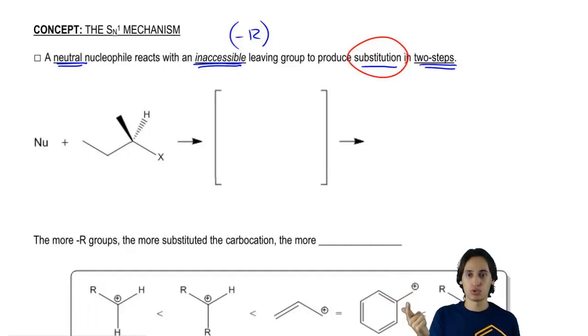Now instead of being negative, it's neutral. Instead of being accessible, it's inaccessible. And instead of happening in one step, it's going to happen in two. So let's just go ahead and start breaking this mechanism down.